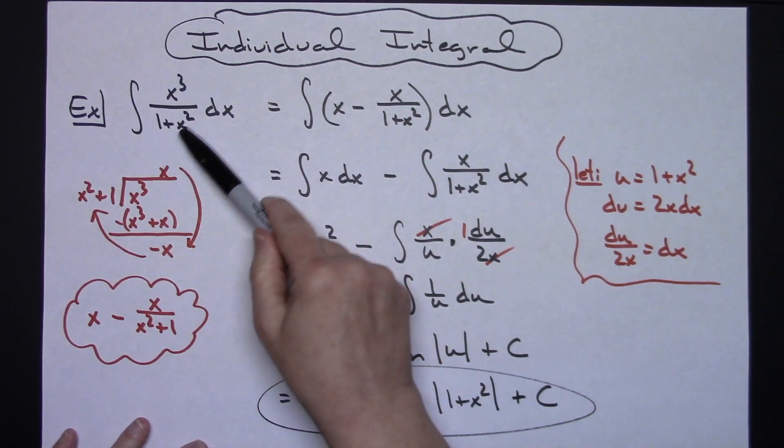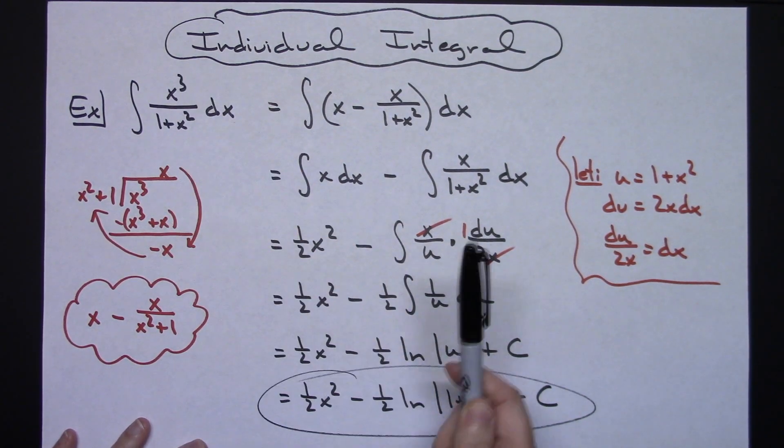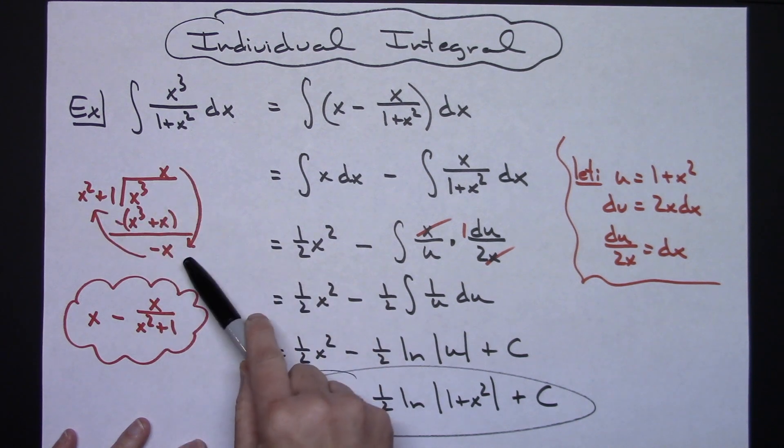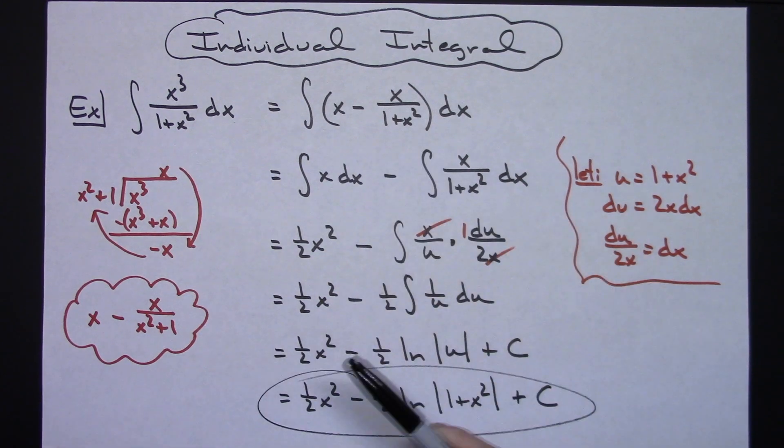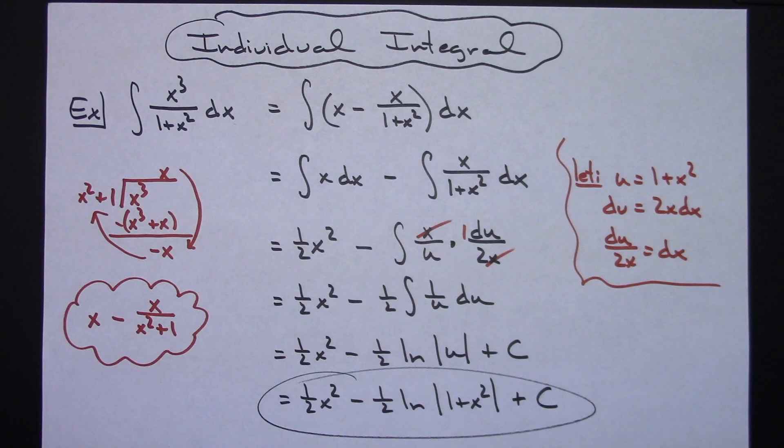And just a lot of times if you have a rational expression here, the easiest way to do it is go ahead and perform a long division on that and come up with an equivalent statement that then is going to be a whole lot easier to integrate. Definitely thanks for watching. If the videos are helping, please share with your friends so that they can benefit too, and don't forget to subscribe to the channel. Thanks.